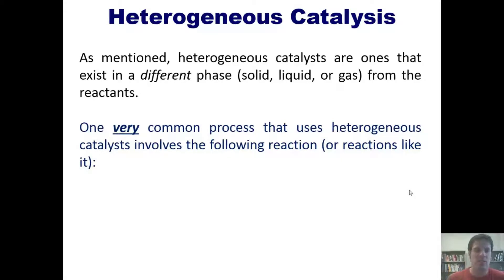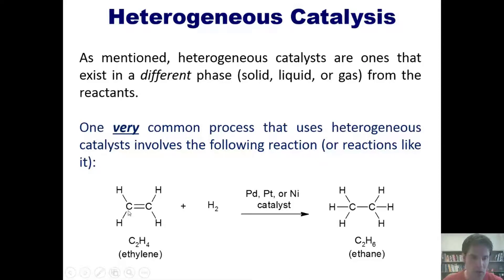One very common process that uses heterogeneous catalysts involves the following reaction. We've got a carbon-carbon double bond. We react it with hydrogen gas and then a catalyst such as palladium, platinum, or nickel. This places these two hydrogen atoms onto these carbons and converts the carbon-carbon double bond to a single bond. This process can convert ethylene gas to ethane gas and can be applied to many reactions.